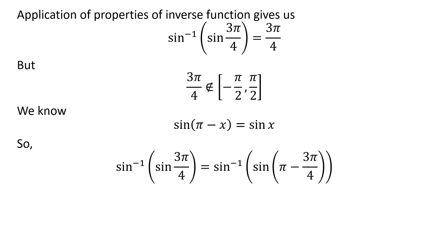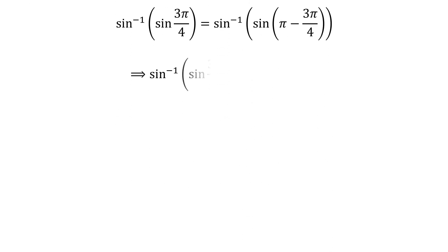So, inverse of sine of sine of 3 times pi upon 4 is equal to inverse of sine of sine of pi minus 3 times pi upon 4. As pi minus 3 times pi upon 4 is equal to pi upon 4.